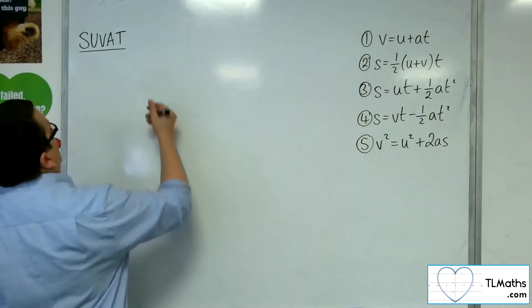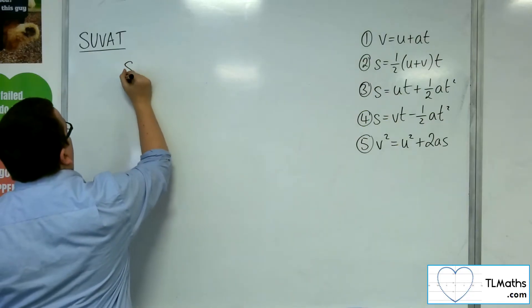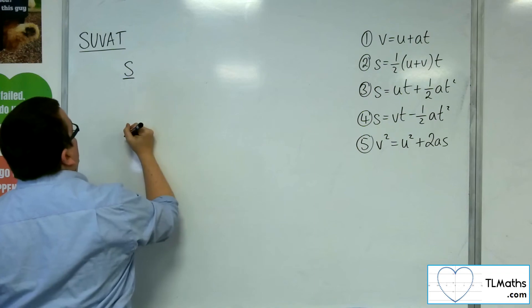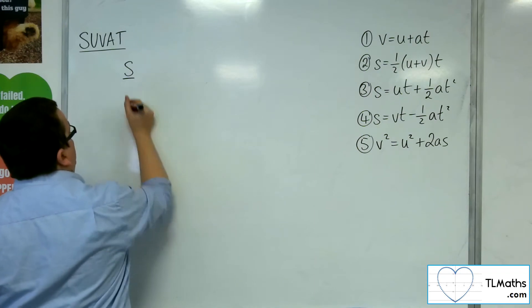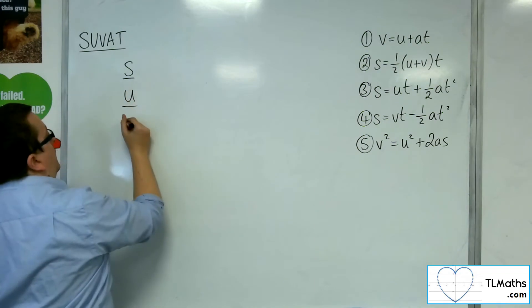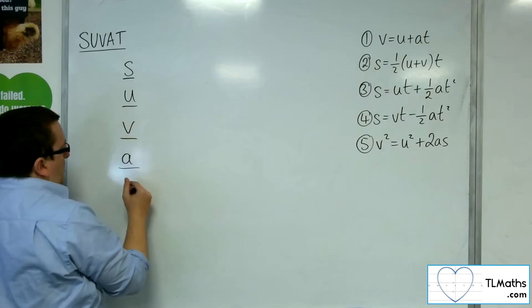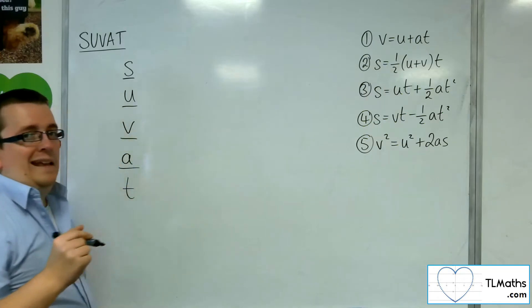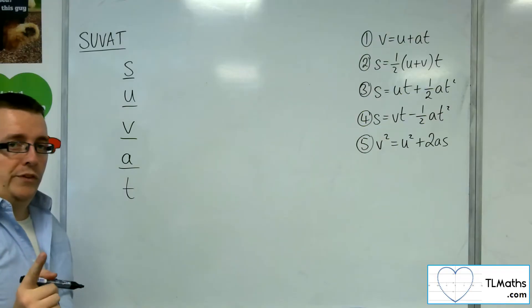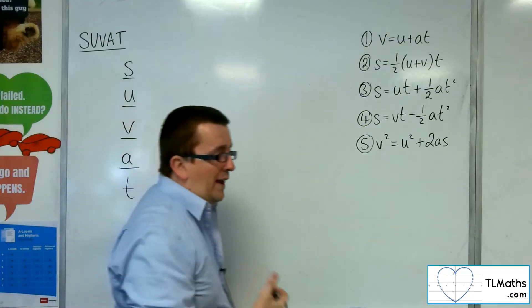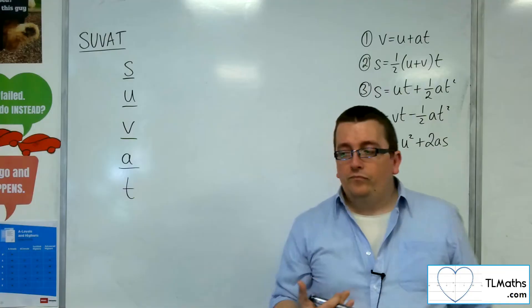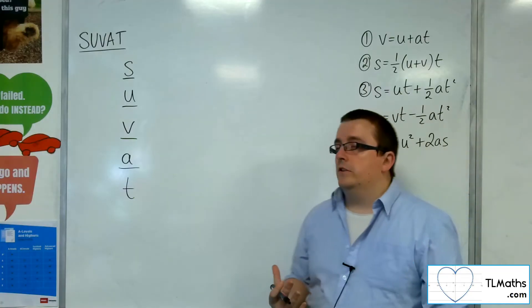So for SUVAT, we've got S that can be represented as a vector, U, V, and A, but T is just a scalar quantity. Time is not a vector. It doesn't have direction.